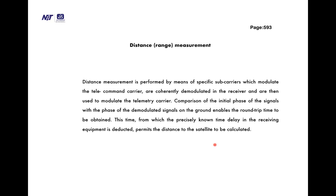We now start with tracking. Tracking means how the satellite will track a station, since it is a moving object — both geostationary and non-geostationary satellites exist. Distance measurement is performed by means of specific subcarriers which modulate the telecommand carrier, are coherently demodulated in the receiver, and are then used to modulate the telemetry carrier. Comparison of the initial phase of the signals with the phase of the demodulated signals on the ground enables the round trip time to be obtained.